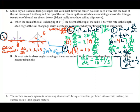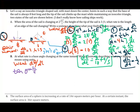Part B: at what rate is the base angle changing at the same instant? We want dθ/dt. All previously found values are still valid. To relate the angle θ to the known variables, we use trigonometry. Since the base is constant and we know a lot about H, we use tangent: tan(θ) equals H over 4 (opposite over adjacent).